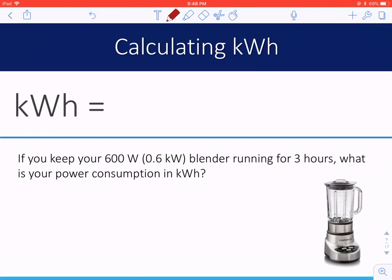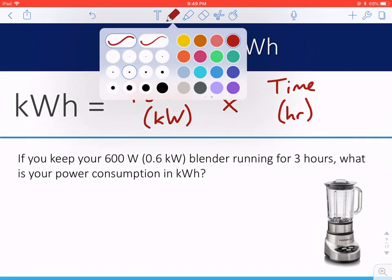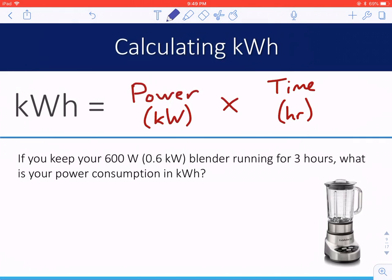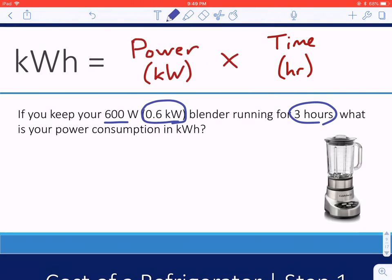So to calculate this kilowatt hours, you're going to take the power in kilowatts times the time in hours. So for example, if you're going to talk about that blender again, let's say, well, we know it's 600 watts, but we're going to use it in kilowatts. And we run it for three hours, which would be some amazing smoothie. We would calculate this 0.6 kilowatts times three hours would ultimately give you 1.8 kilowatt hours.